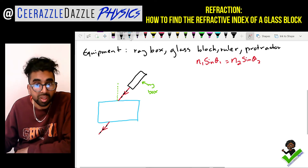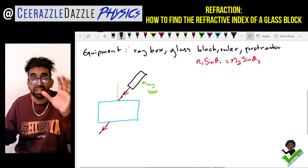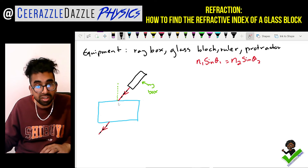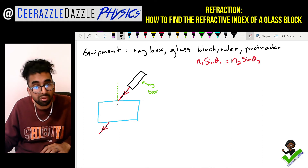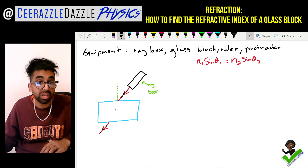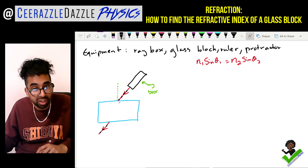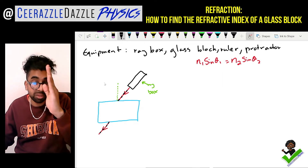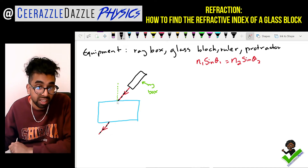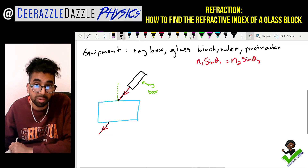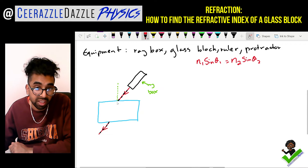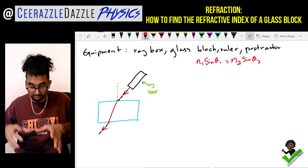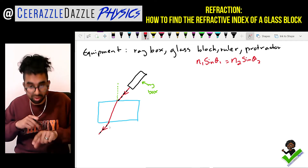You don't have the refracted ray visible inside the block, but the simple thing you can do is: since you've marked where it hits the block and where it exits, you remove the block, take a ruler, and connect those two dots on the piece of paper. You've removed the glass block and drawn the line, and now you can extend your normal out.